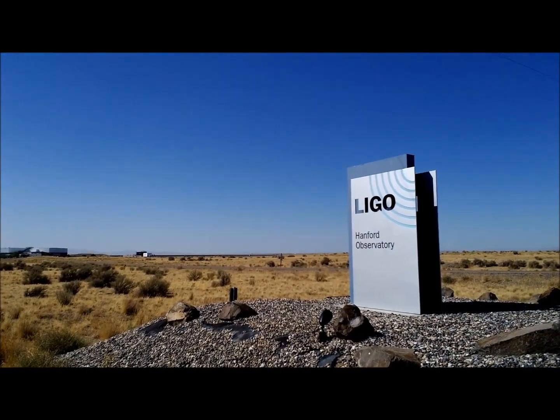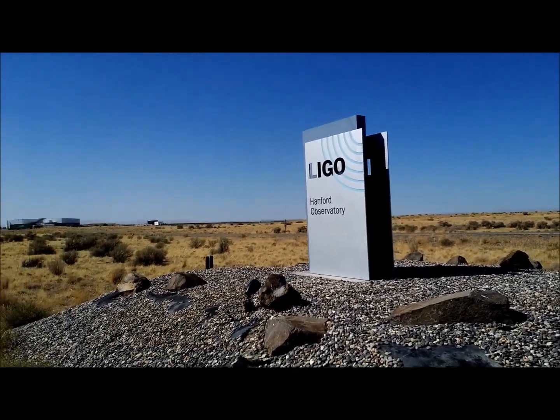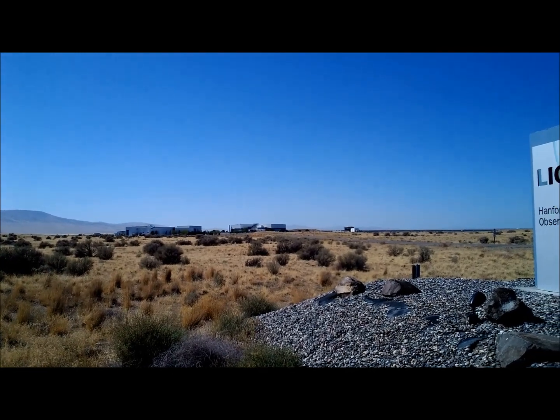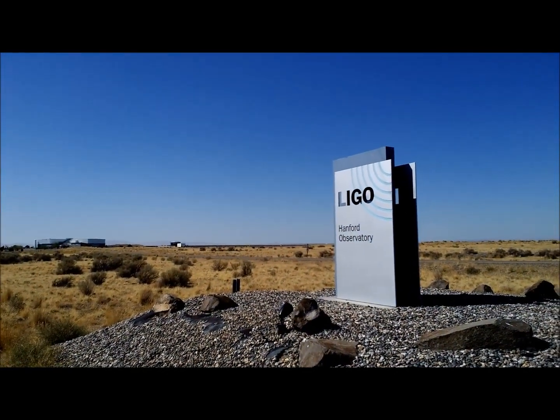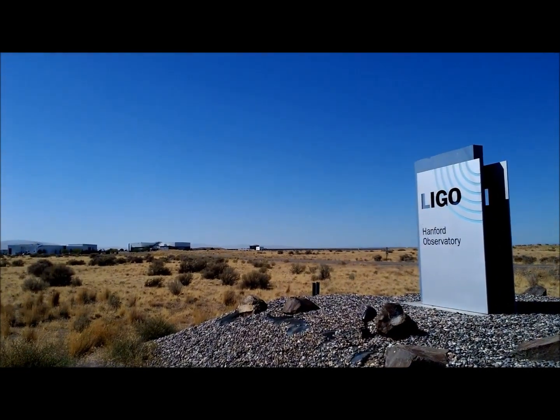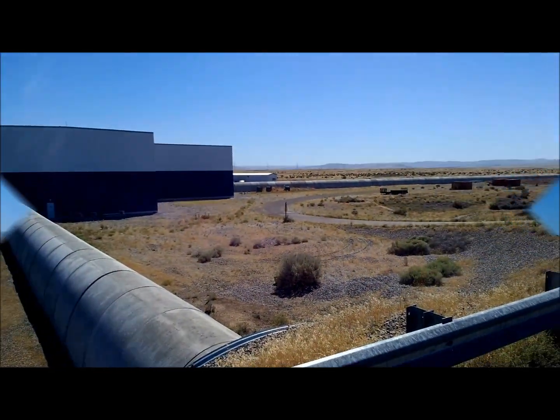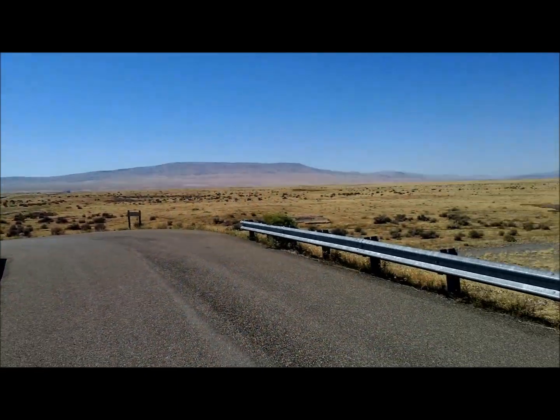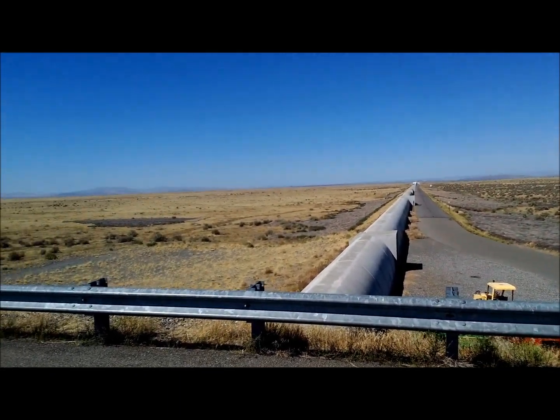But Advanced LIGO is scheduled to go online here probably by the end of next year. They're doing the commissioning phase right now for LIGO Hanford and LIGO Livingston. And by the end of 2015, Advanced LIGO should be running with ten times the sensitivity, and hopefully they'll be able to detect gravity waves up here at the LIGO Hanford facility. You can see down both detector arms here, very neat.